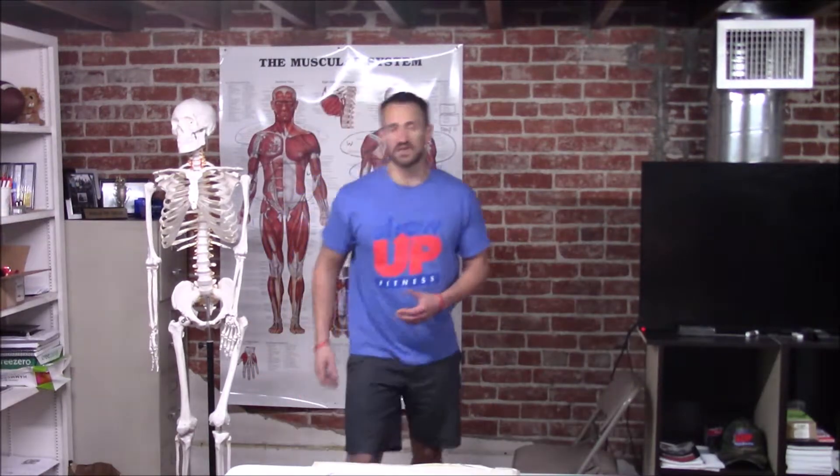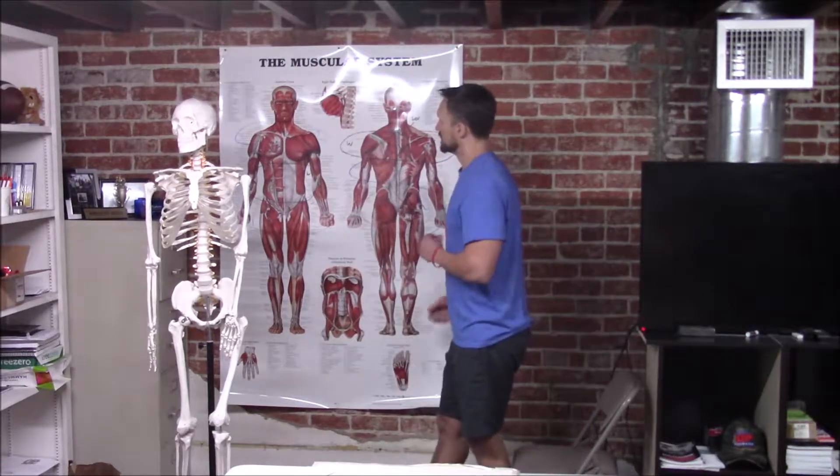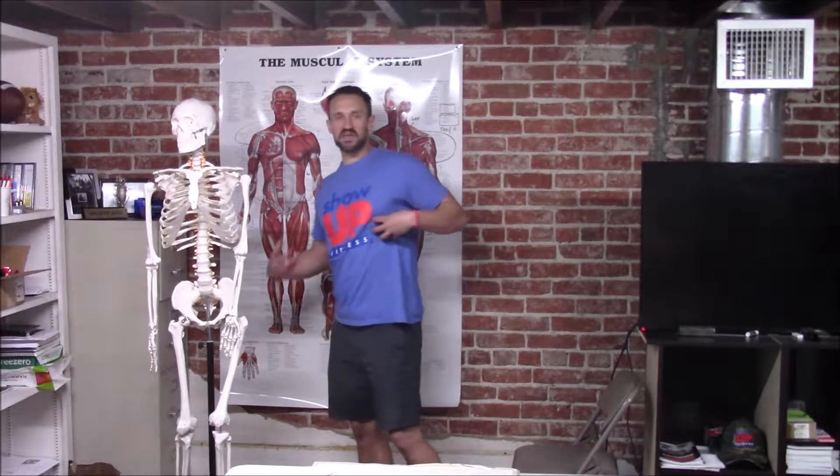When you squeeze, you create that intra-abdominal pressure via bracing the transverse abdominus. Moving to the posterior side, we've got the latissimus dorsi. Three main actions: extension, adduction, and internal rotation. Got the serratus anterior—I call these the Rocky muscles—they protract the scapula.